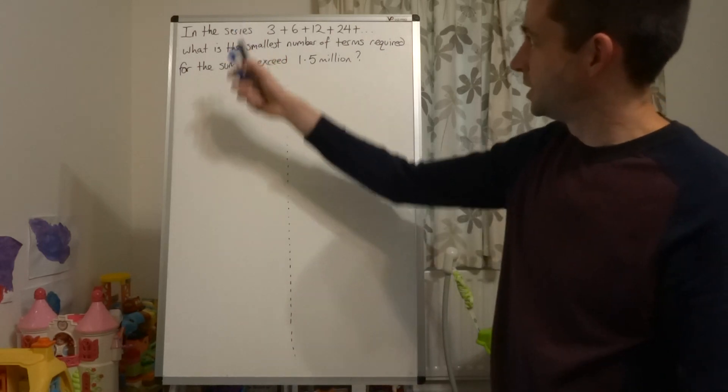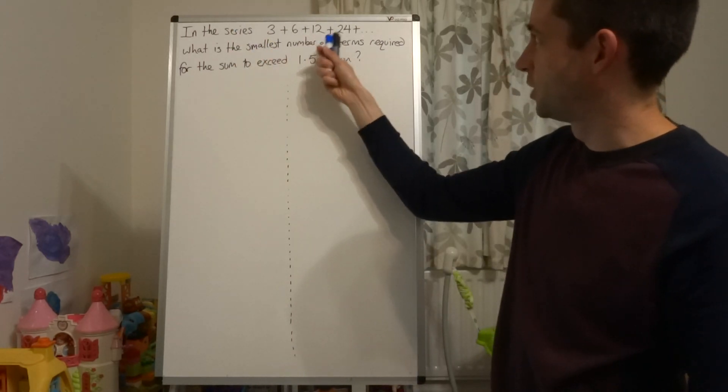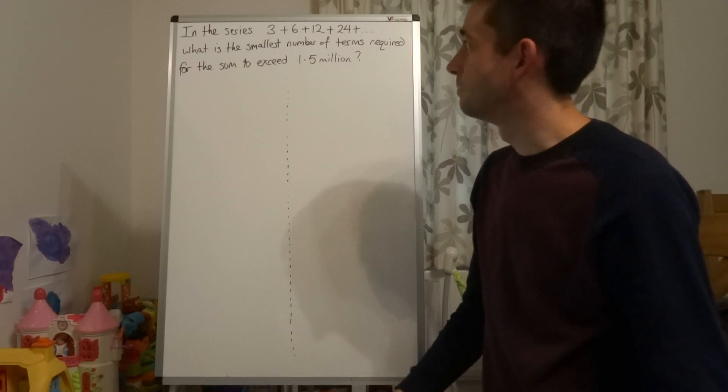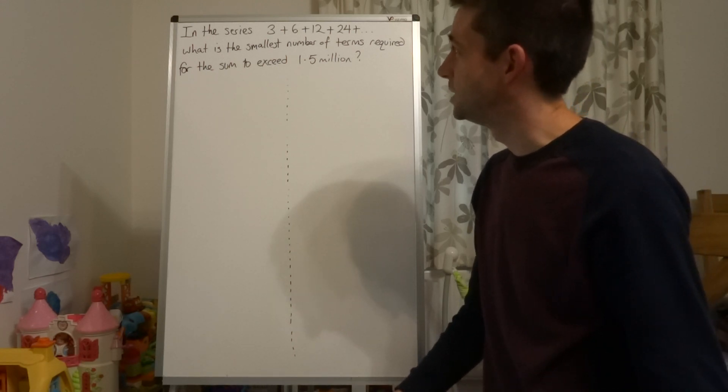So we have, in the series 3 plus 6 plus 12 plus 24, etc. What is the smallest number of terms required for the sum to exceed 1.5 million?